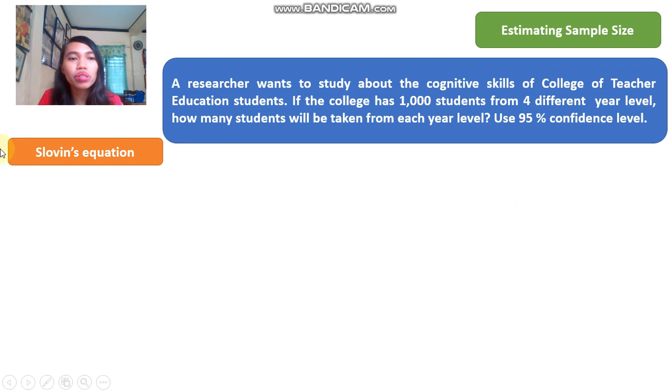Okay, we will use the Sloven's equation. And this is the Sloven's equation: n equals N, this is the number of population, all over 1 plus N times e squared.